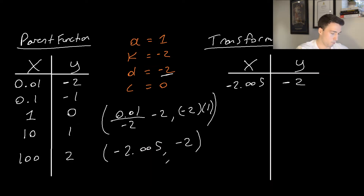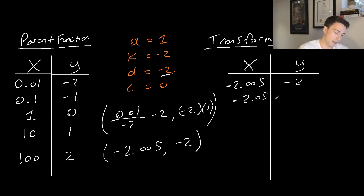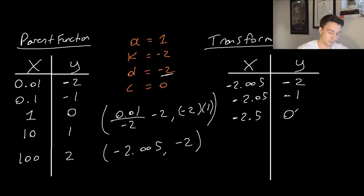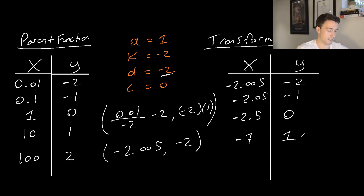For the next parent point (0.1, −1): x is 0.1/(−2) − 2 = −0.05 − 2 = −2.05, and y is −1 × 1 + 0 = −1, giving (−2.05, −1). For (1, 0): x is 1/(−2) − 2 = −0.5 − 2 = −2.5, and y is 0, giving (−2.5, 0). For (10, 1): x is 10/(−2) − 2 = −5 − 2 = −7, and y is 1, giving (−7, 1). For (100, 2): x is 100/(−2) − 2 = −52, and y is 2, giving (−52, 2).